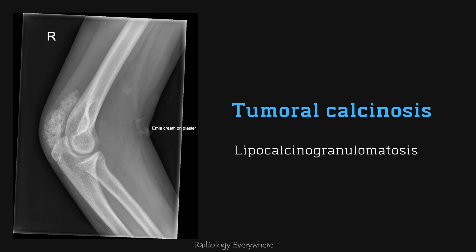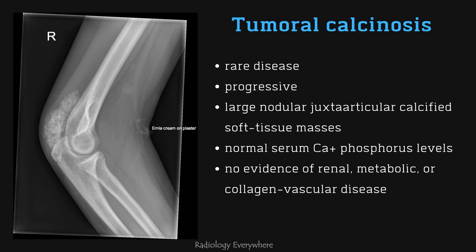In this video, we are talking about Tumoral Calcinosis, also known as Lipocalcinogranulomatosis. This is a rare disease with progressive large nodular and periarticular calcified soft tissue masses in patients with normal serum calcium and phosphorus, and there is no evidence of renal, metabolic, or collagen vascular disease. It is characterized by painless periarticular soft tissue masses and is caused by hereditary metabolic dysfunction of phosphate regulation, and should not be used for soft tissue calcification in general.